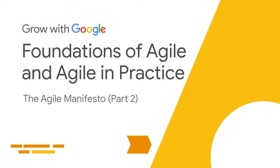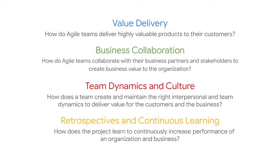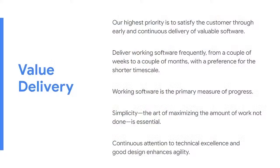For this course, I've grouped the 12 principles into four themes. The four themes of the Agile principles are: value delivery — how do Agile teams deliver highly valuable products to their customers? Business collaboration — how do Agile teams collaborate with their business partners and stakeholders? Team culture — how does a team create and maintain the right interpersonal dynamics to deliver value? And retrospectives — how does the project learn to continuously increase performance of an organization and business? I've grouped each of the 12 principles under these themes so they're easier to learn and remember.